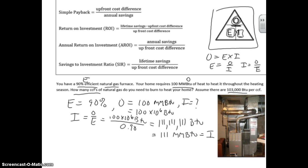But remember, we want to know how many CCFs of natural gas we need. So all we need to do here is convert this to CCF. Here's our conversion factor, 103,000 BTUs per CCF.